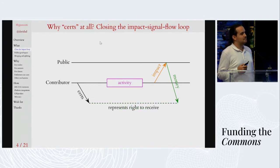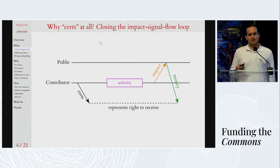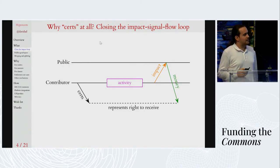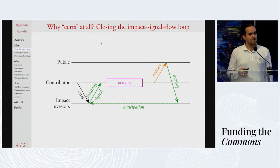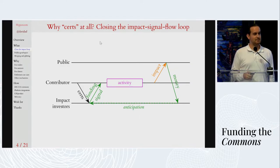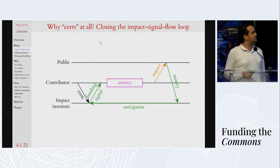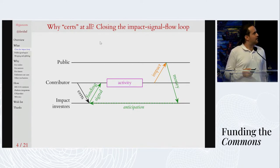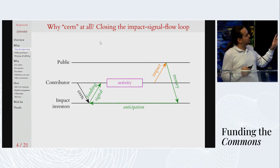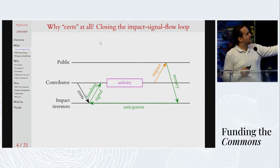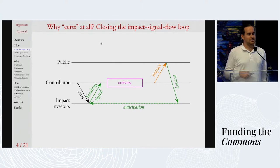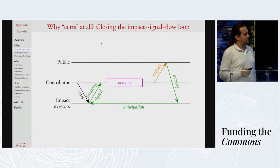A less costly idea is impact certificates. This represents the right to future retroactive rewards for a public good producing activity. Whenever an asset that represents the right to a future cash flow is on the table, that induces the presence of a special kind of person called an investor, who specializes in anticipating future cash flows and exchanging money for them today — purchasing an impact certificate from the contributor in advance of the activity, thereby providing the funding signal that anticipates the future rewards caused by the impact. Closing the loop also makes that transaction possible by giving the public someone to hand the money to after the fact.